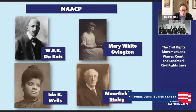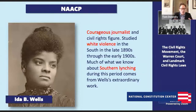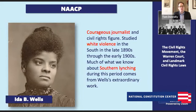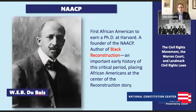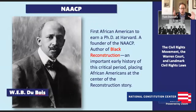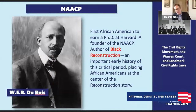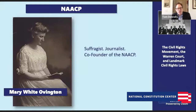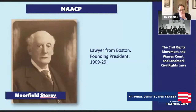The NAACP brings together many really important key figures. One is Ida B. Wells, a courageous journalist and civil rights figure who studied white violence in the South in the late 1890s through the early 1900s. There's also W.E.B. Du Bois, one of the great intellectuals in American history — the first African-American to earn a PhD at Harvard. He wrote a landmark work about Reconstruction entitled Black Reconstruction, which places African-Americans at the center of the Reconstruction story. Two other key figures were Mary White Ovington, a suffragist and journalist, and Moorfield Story, a lawyer from Boston and the founding president from 1909 to 1929.